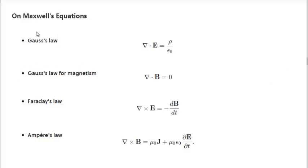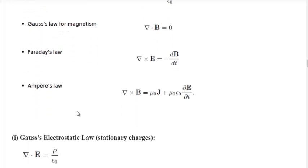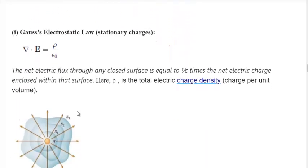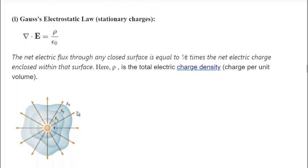So we have Gauss's law for electrostatics, and the second one doesn't always have a name but is often referred to as Gauss's law for magnetism. Then we have the divergence of B equals zero, Faraday's law, and Ampere's law. I'm going to go through each of these in a little more detail, just to give you an idea of what each equation is for.